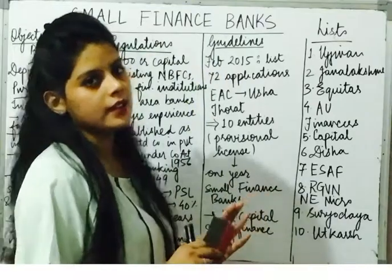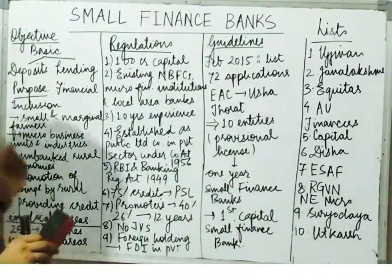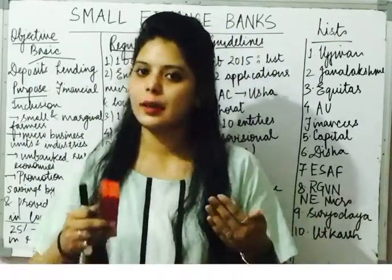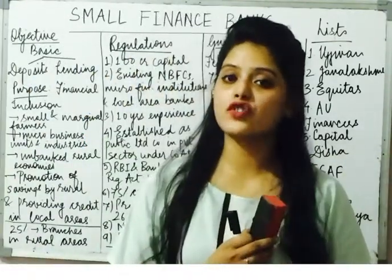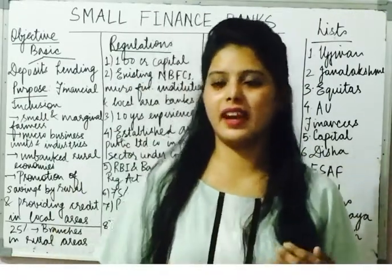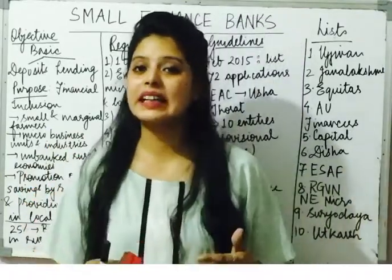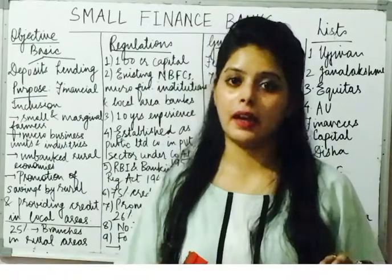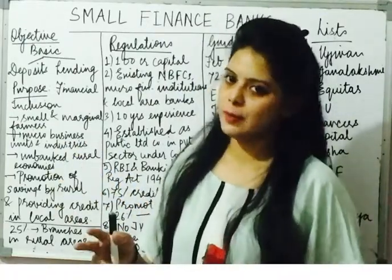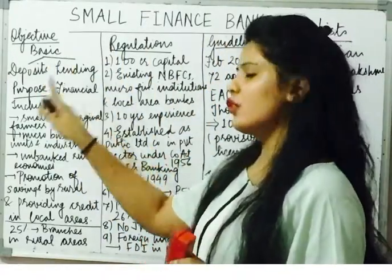We will first see its objectives, second its regulations, third guidelines, and fourth the list of small finance banks. Now let's begin with the objective. Normal banking's basic objective is deposits and lending, whereas in case of payments bank it is a bit different — they are allowed to accept deposits and allow people to do remittances, but lending is not part of payments bank.